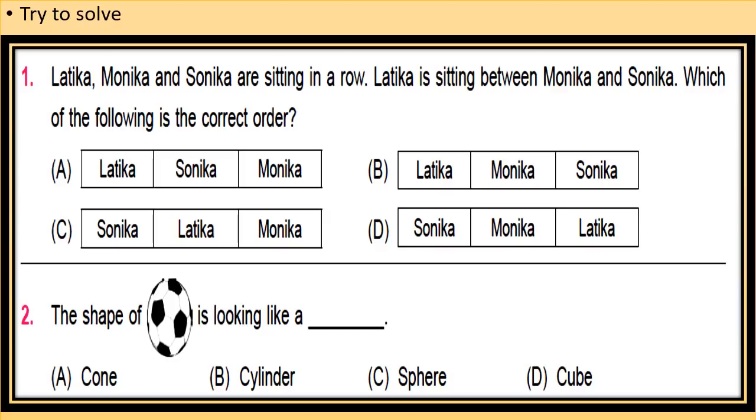Second: is the shape of football looking like a cone, cylinder, sphere, or cube? The shape of football is always a sphere, so correct option is C.